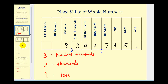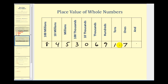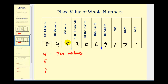Let's take a look at one more example. We'll go ahead and put the commas in to separate our place values — starting from the right, we put a comma between every three digits. So this would be eight hundred forty-five million, three hundred six thousand, nine hundred seventeen. This four would be in the ten-millions place value, the five would be in the millions place value, and the seven would be in the ones place value.